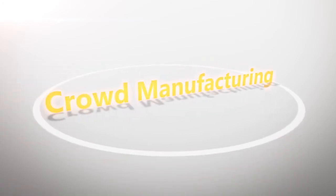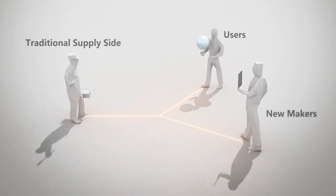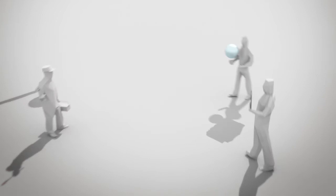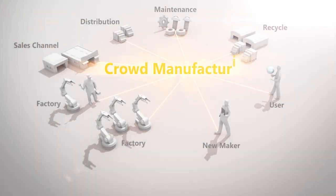Our solution is crowd manufacturing, which changes the structure of manufacturing. With the new structure, we will connect the traditional supply side with new makers and users. We will make it possible to share facilities and knowledge of production and maintenance, as well as various networks such as sales and procurement channels.